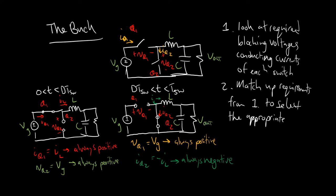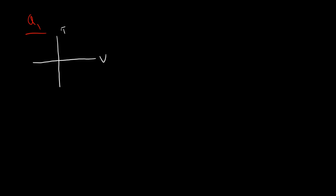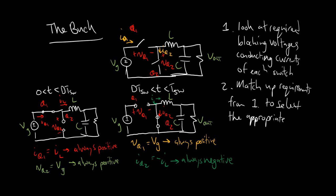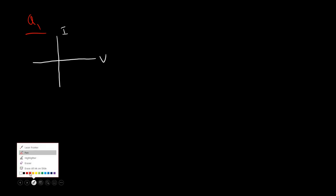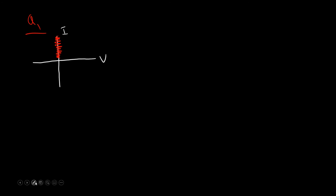We have all the information we need. For Q1, let's draw out the IV characteristic we need. The current is always positive and we have to block positive voltages. So explicitly, we have to conduct positive currents and we have to block positive voltages.